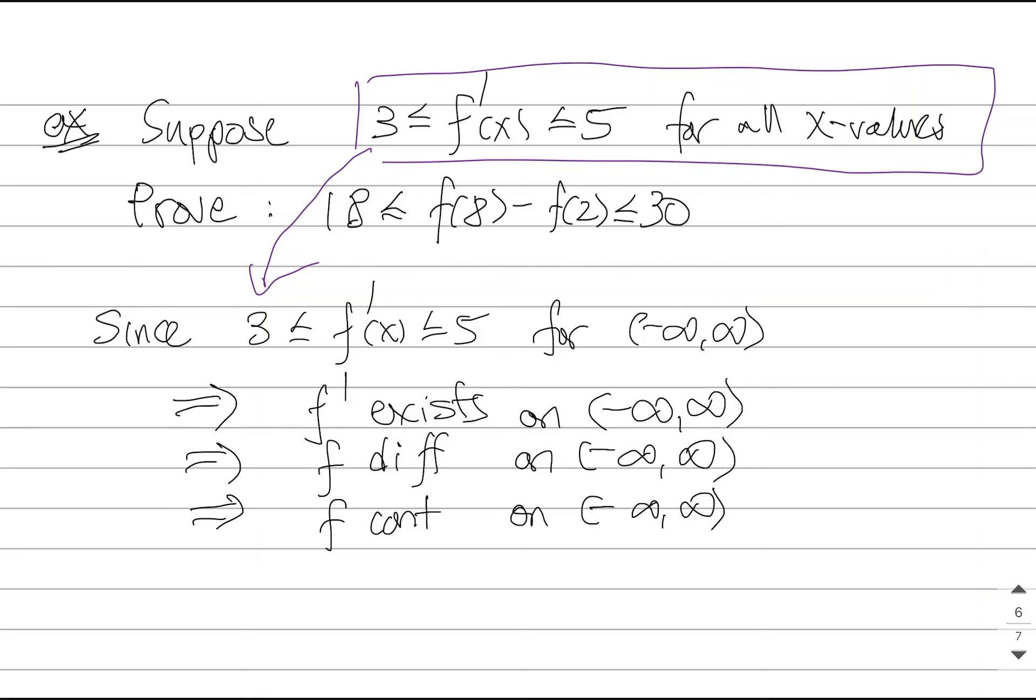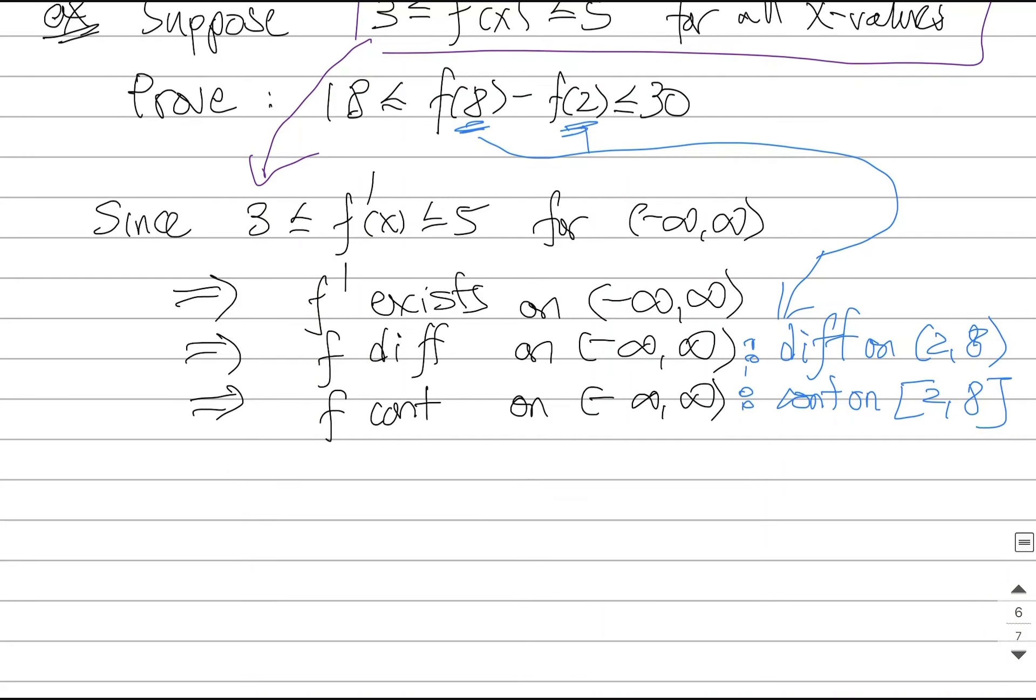Now, just like I was saying earlier, when I know something about a function on an entire interval, I can collapse that down to whatever sub-interval I like. Now, I'm going to look at what the question is asking me to prove. The question is asking me to prove something about this function at the value of 8 and the value of 2. So based on these two things, I am going to now specifically tailor this to what I want. I am now going to say, look, because my function is differentiable everywhere, it also means that it's differentiable on the open interval 2 to 8. Because it's continuous everywhere, I can pick whatever sub-interval I want, and I'm going to choose the closed sub-interval of 2 to 8.